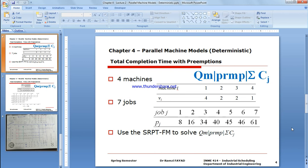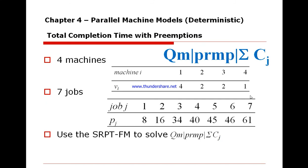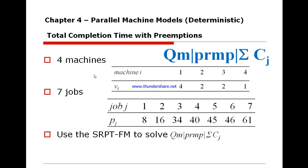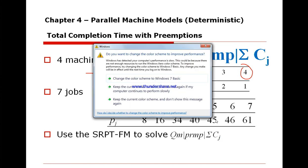We have four machines — machine one, two, three, and four — each with different speeds. We also have seven jobs with processing times: 8, 16, 34, 40, 45, 46, and 61.